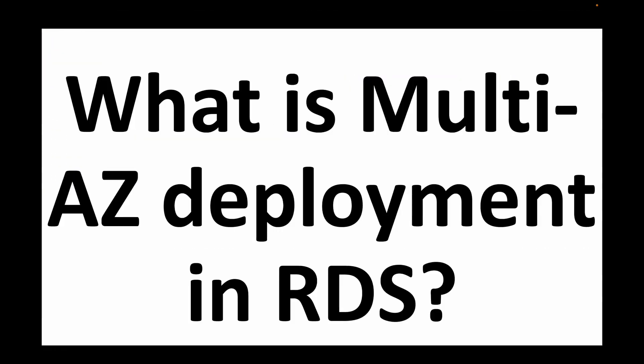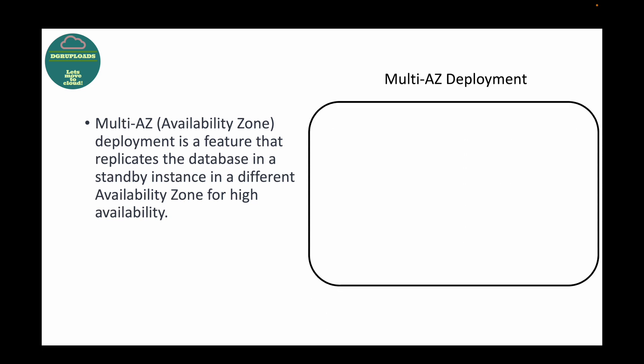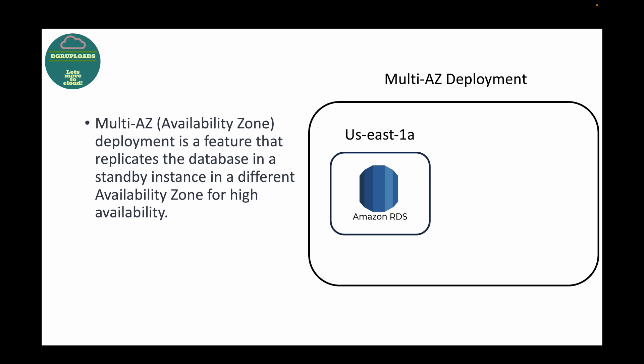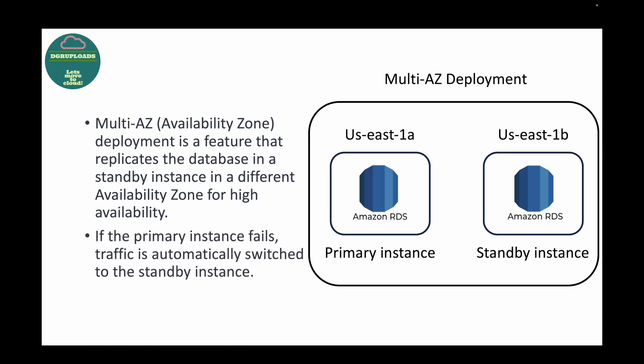The next question is: what is Multi-AZ deployment in RDS? If you want to make your database highly available and fault tolerant, that's where we make use of Multi-AZ. It's a feature that helps you replicate your database — you'll have a primary database and a standby database running in separate availability zones. For example, in us-east-1a you'll have your primary instance and in a separate availability zone you'll have your standby instance. If the primary instance fails, traffic will automatically switch to the standby instance.